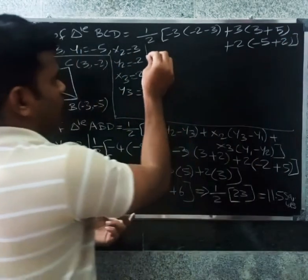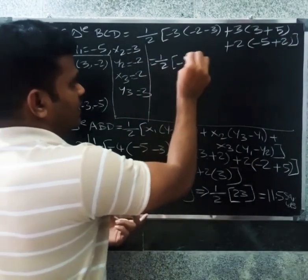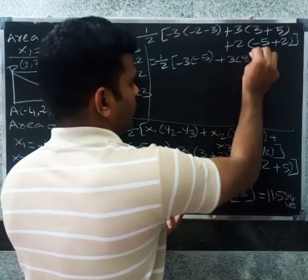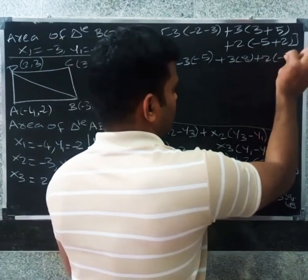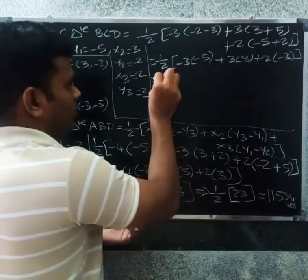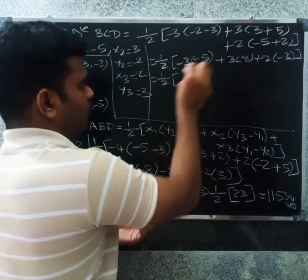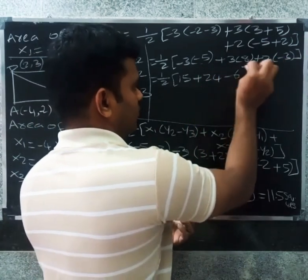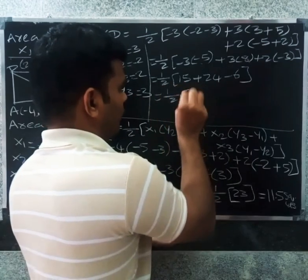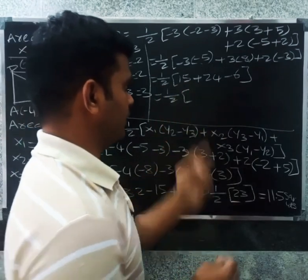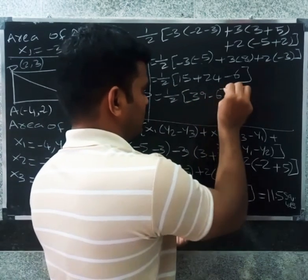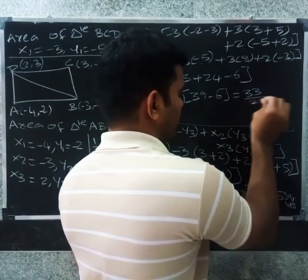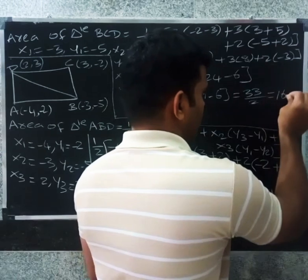Substituting into the formula: half into [-3 into (-5) + 3 into 8 + 2 into (-3)] = half into [15 + 24 - 6] = half into 33 = 16.5 square units. So area of triangle BCD equals 16.5 square units.